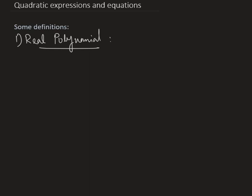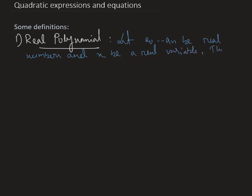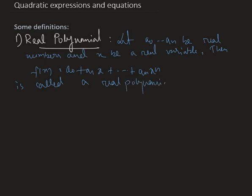Let a0, a1, a2, ... , an be real numbers, and let x be a real variable. Then f(x) = a0 + a1·x + ... + an·x^n is called a real polynomial of real variable x with real coefficients.